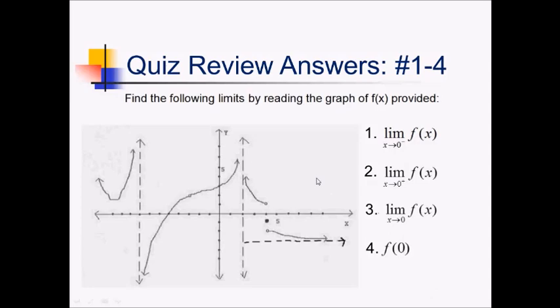For this problem, we're trying to use this graph to find various limits and function values. So for Part A, we're asking about limit as x approaches 0 from the left. In fact, all these questions, A through D, are asking about the properties at 0.